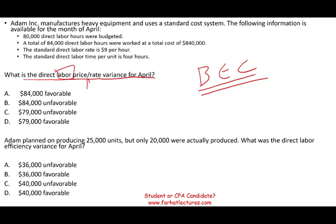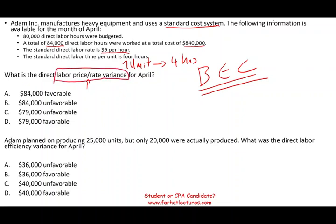It's labor and it's price or rate, so now I know what I'm looking for. Adam manufactures heavy equipment and uses a standard cost system. The following information is available for April: 80,000 direct labor hours were budgeted; a total of 84,000 direct labor hours were worked at a total cost of $840,000; the standard direct labor rate is $9; and the standard direct labor time per unit is four hours.